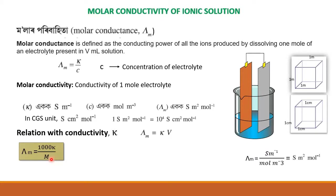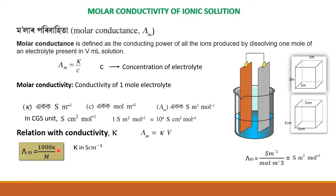M is equal to 1 mol per liter. So when we have mol per liter, lambda M equals 1000 kappa divided by M. And kappa divided by C where C is in mol per meter cube, versus M in mol per liter — this is the relation.